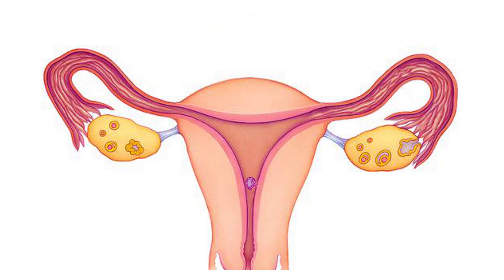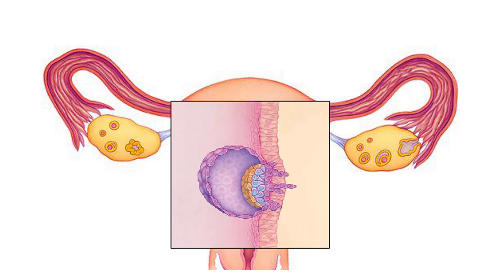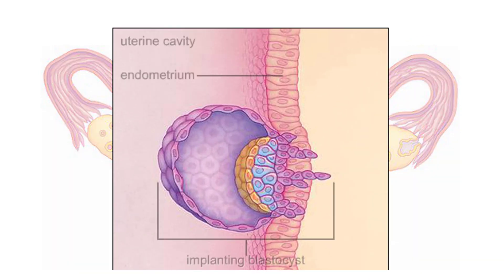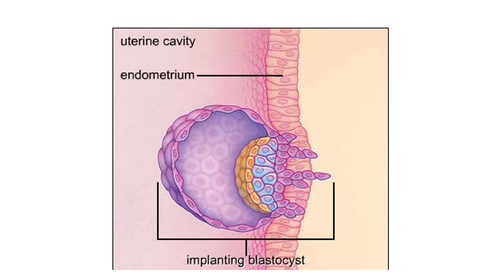About a week after fertilization, implantation is underway. The blastocyst adheres to the endometrium that lines the uterus and begins to send out projections into the maternal tissues.